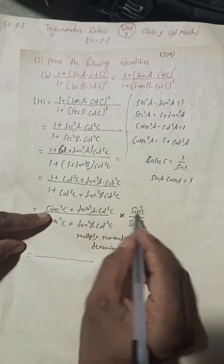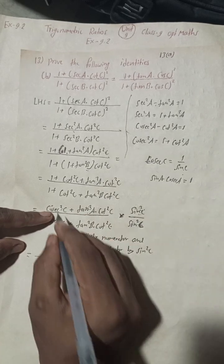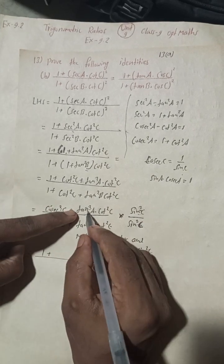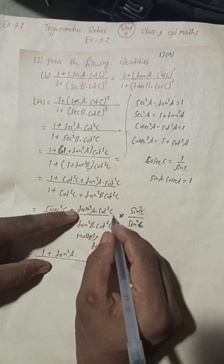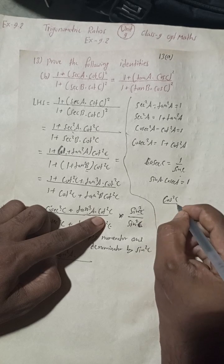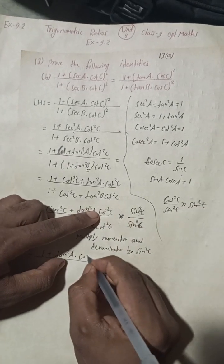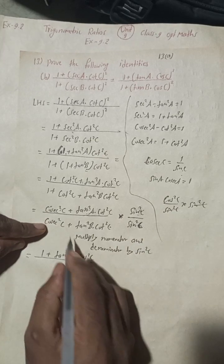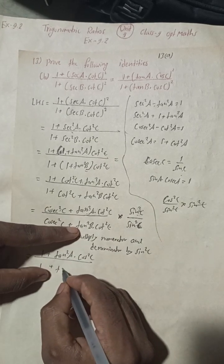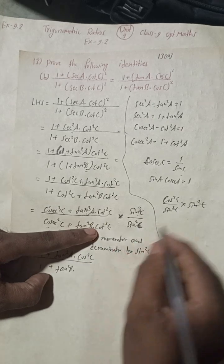When sin²C is multiplied: cosec²C · sin²C = 1, so the numerator becomes 1 + tan²A · cot²C · sin²C. Since cot²C = cos²C/sin²C, multiplying by sin²C cancels, giving cos²C. So the numerator is 1 + tan²A · cos²C, and similarly the denominator is 1 + tan²B · cos²C.